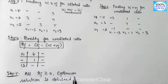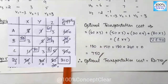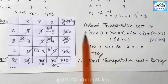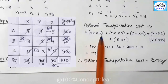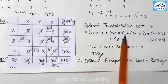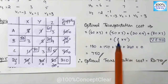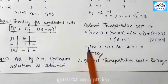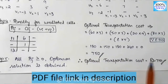Next, we calculate the optimal transportation cost. Allocation into cost function: 60 into 3 equals 180, plus 50 into 3 equals 150, plus 20 into 9 equals 180, plus 80 into 3 equals 240, plus epsilon into 5 equals 0 (since epsilon is 0). Adding all values: the total is 750. Therefore, the optimum transportation cost is Rs. 750.